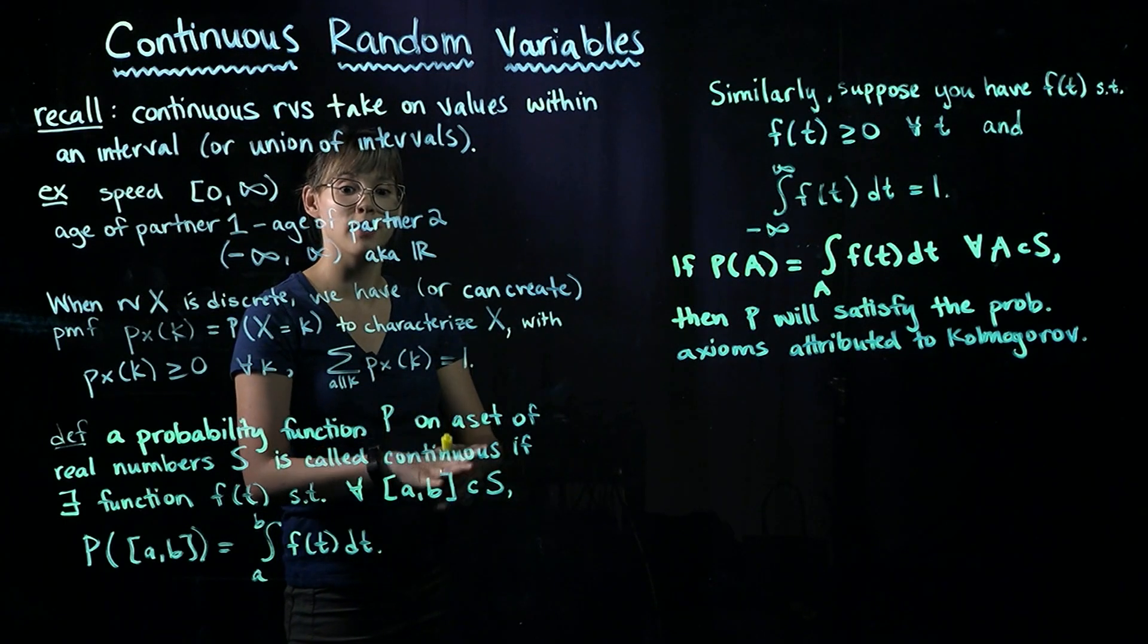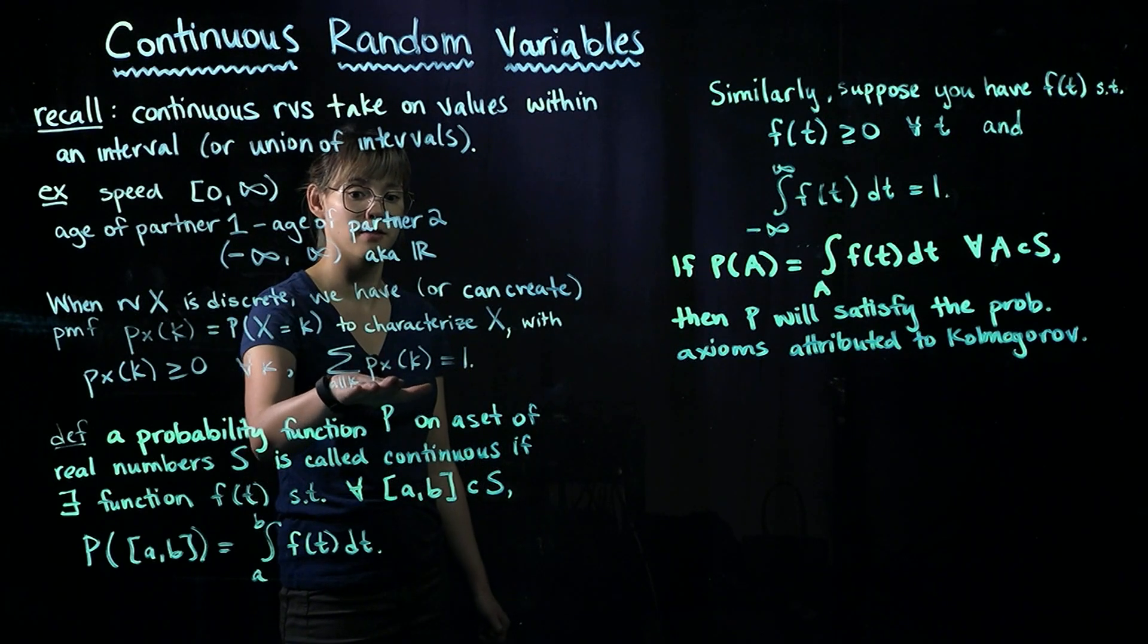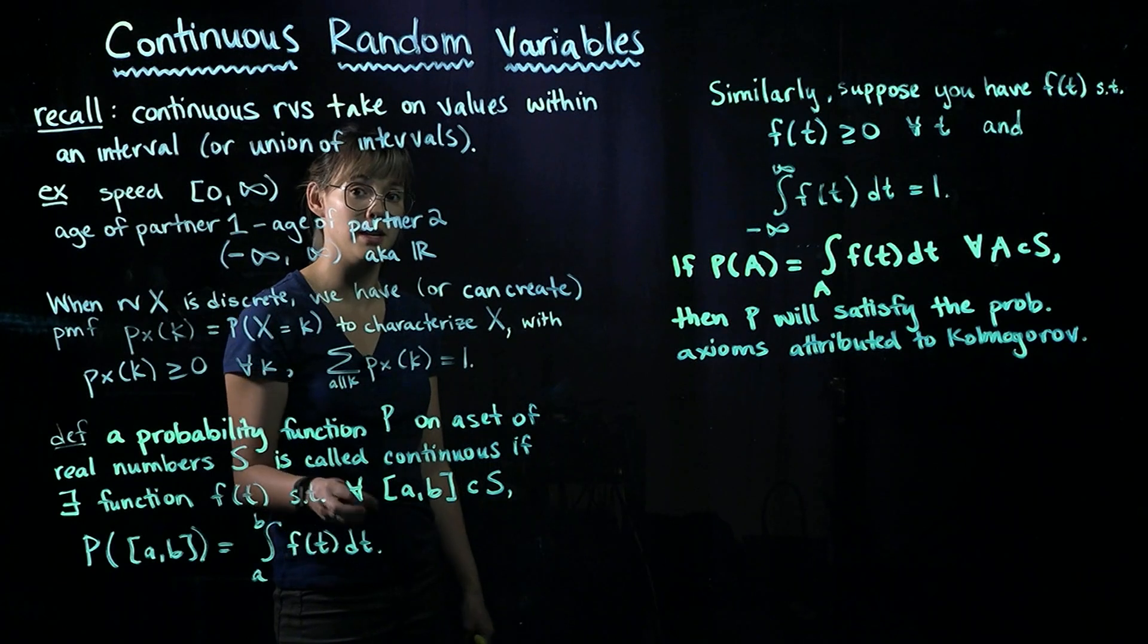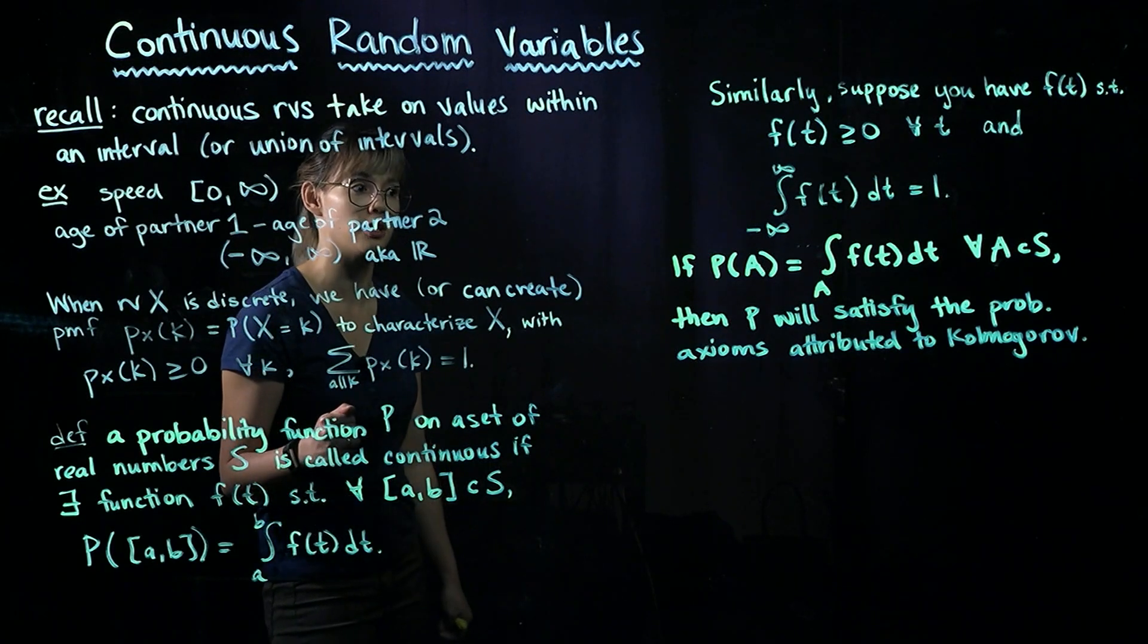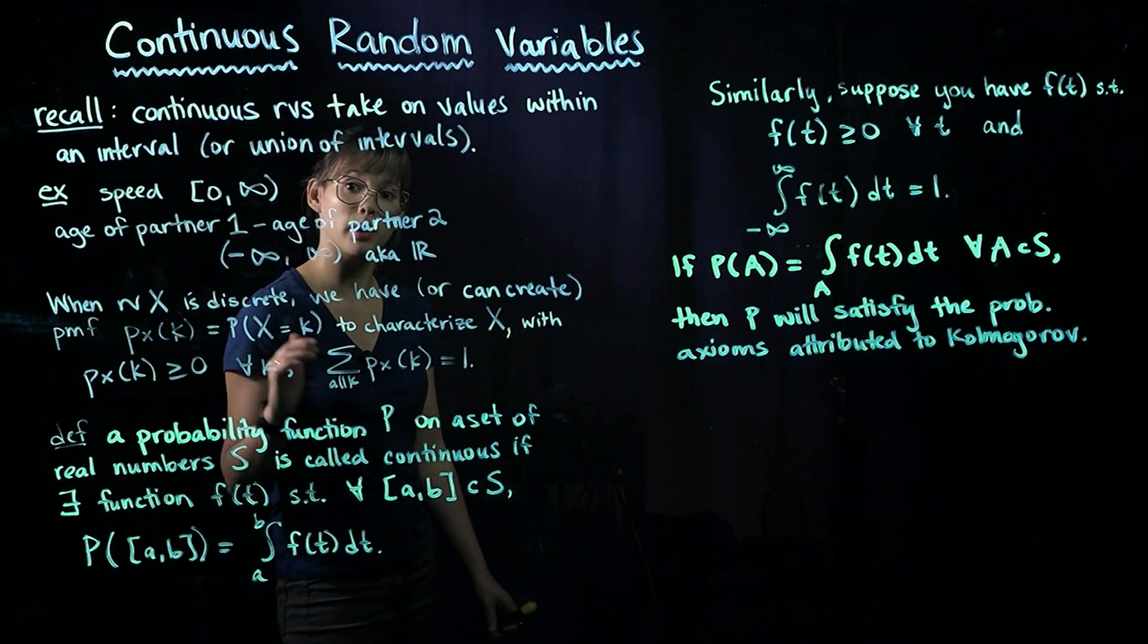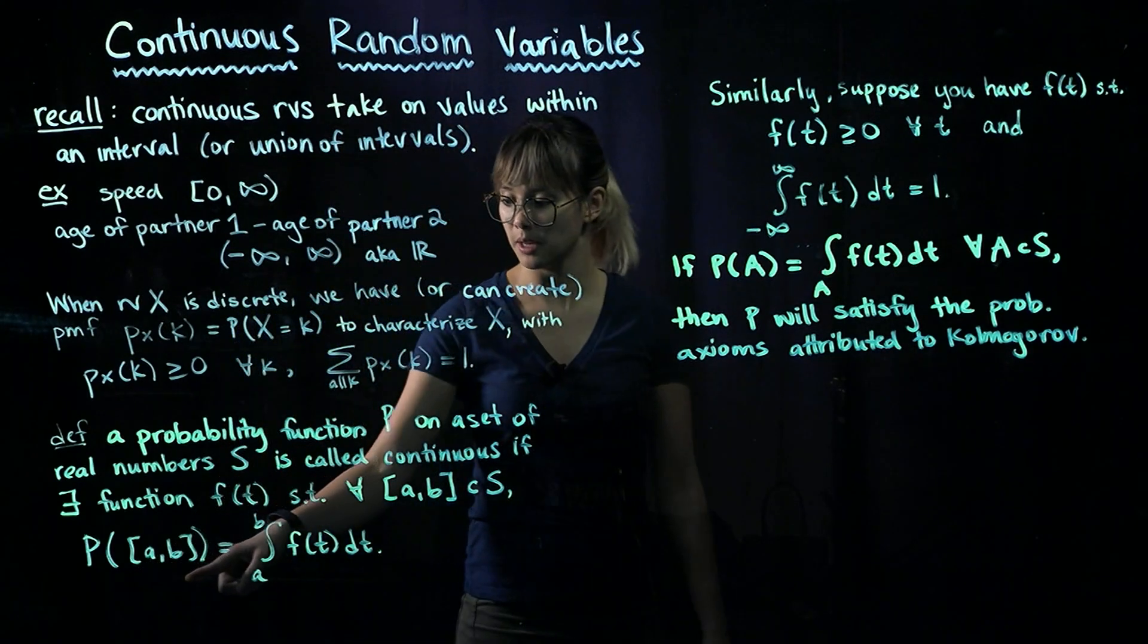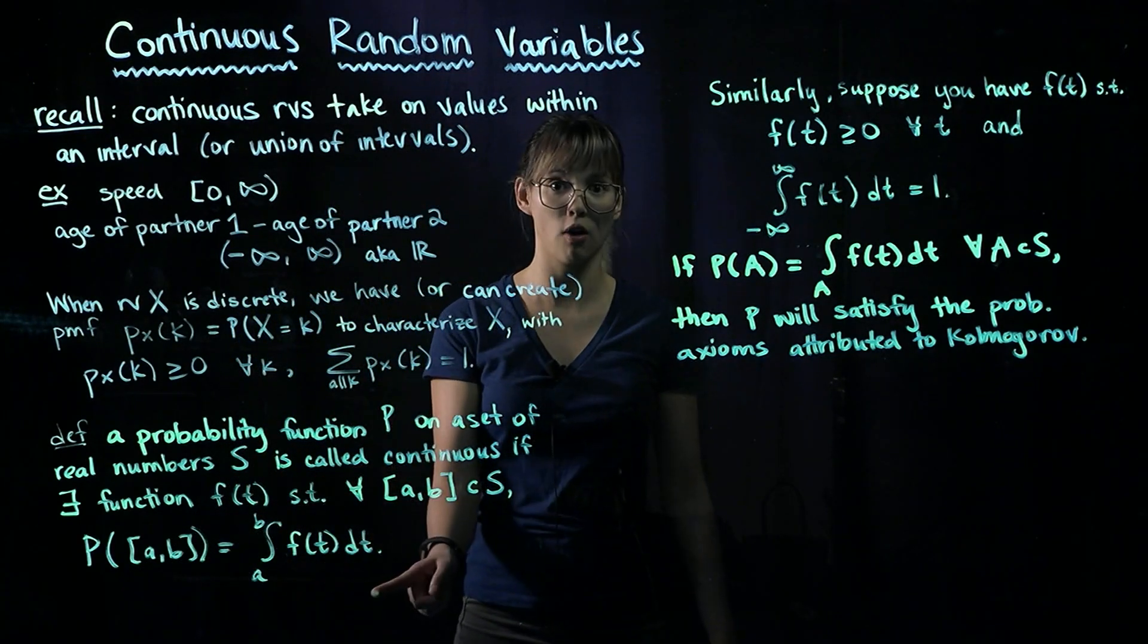So we have the equivalent of the PMF. It's this F of T thing. We're going to call it the PDF, probability density function. And if we want to calculate a probability for some interval A to B, then we're going to integrate over that interval.